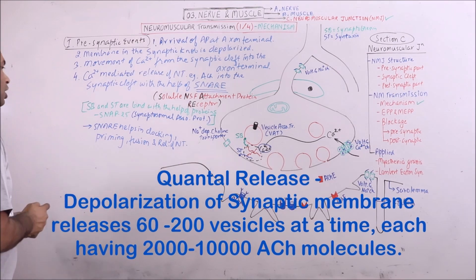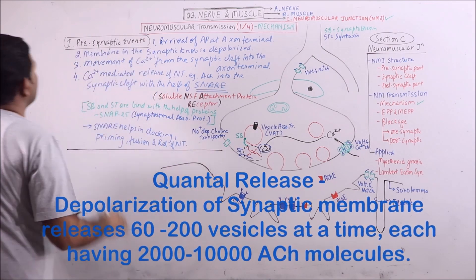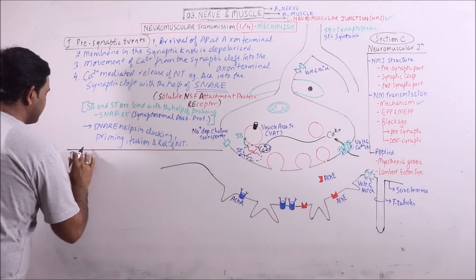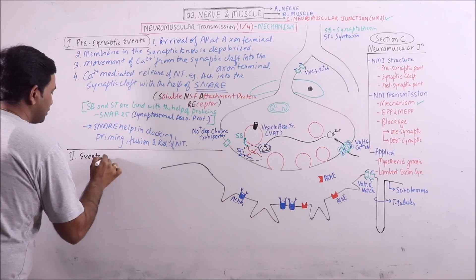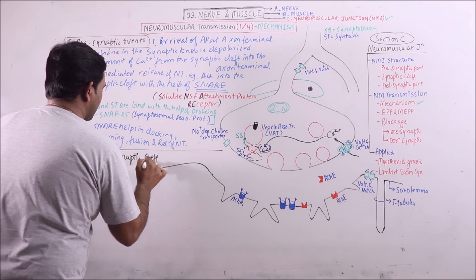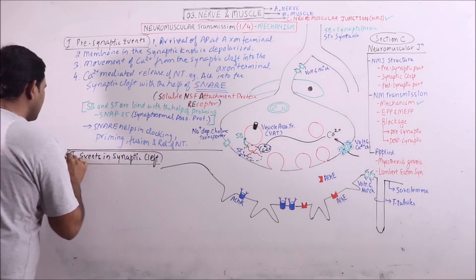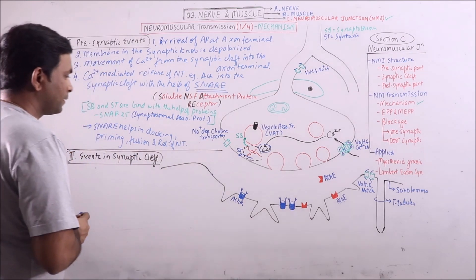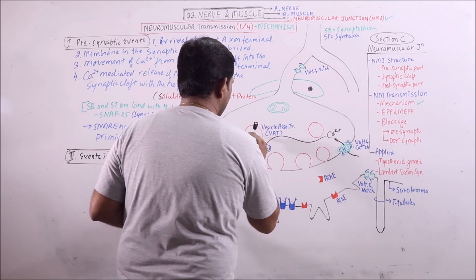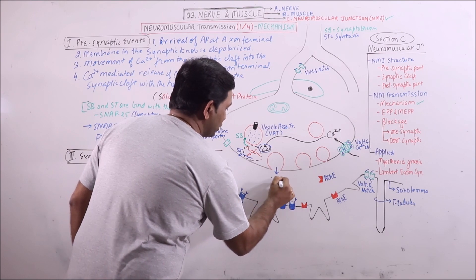These all events basically are involved in presynaptic events. Now we will discuss the events occurring at synaptic cleft. As the neurotransmitters are released, these are acetylcholine molecules.